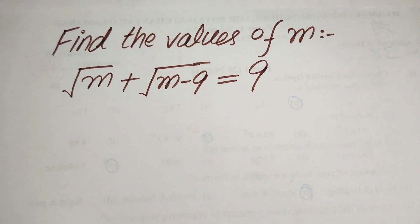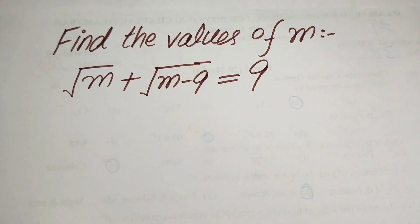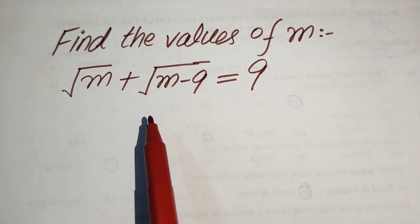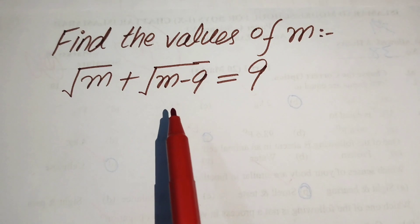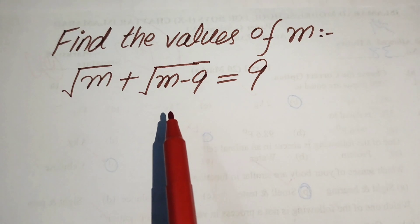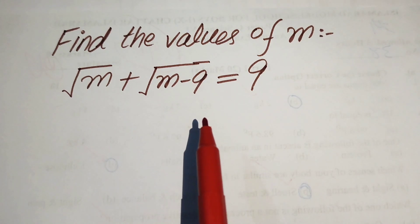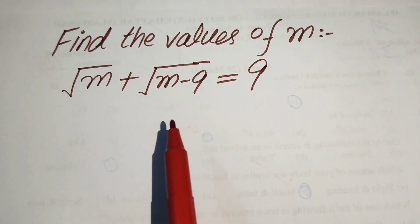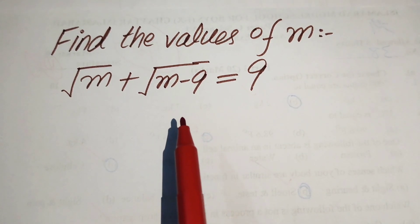Hello everyone, welcome. We will solve this nice algebra problem. We have square root of m plus square root of m minus 9 equals 9, and we solve this problem for the values of m.